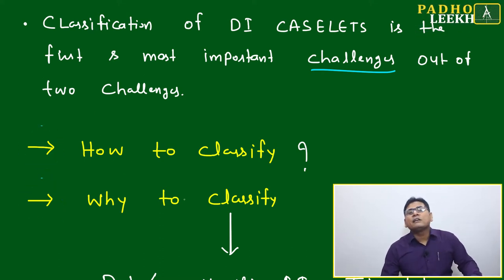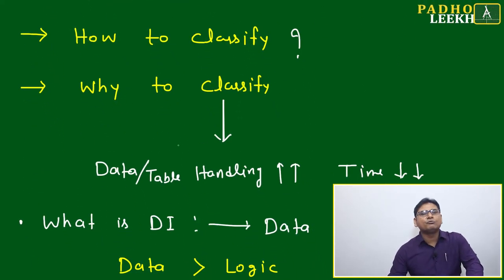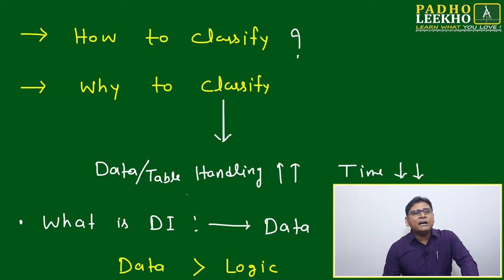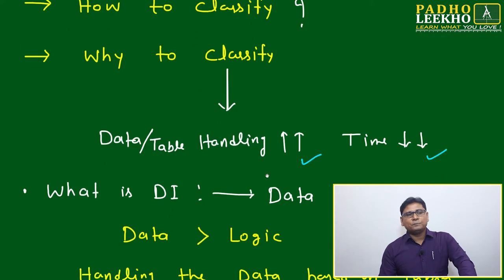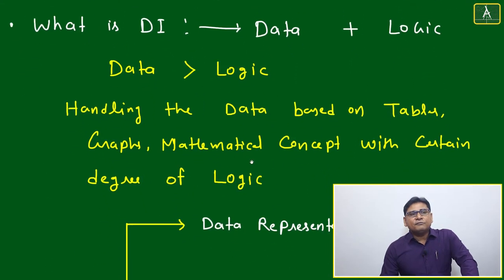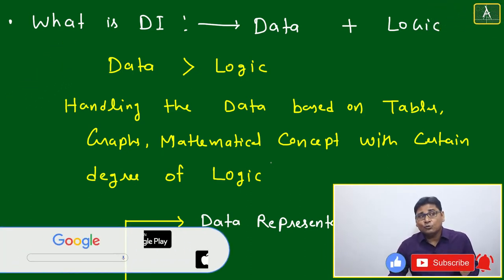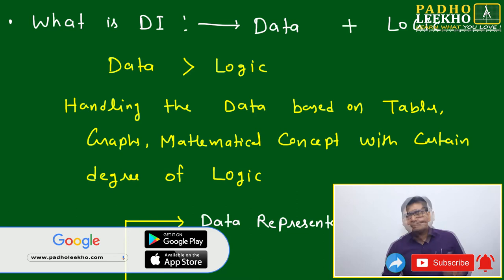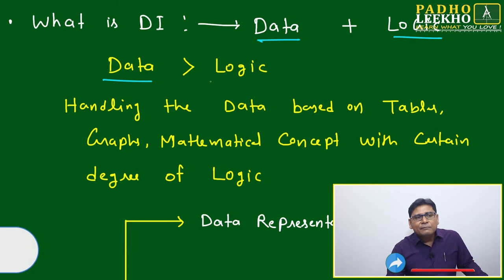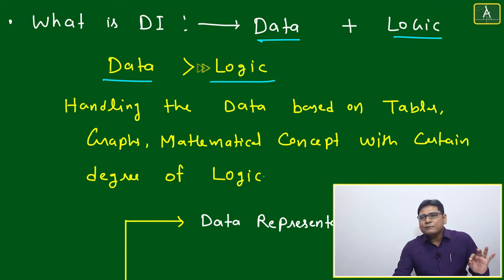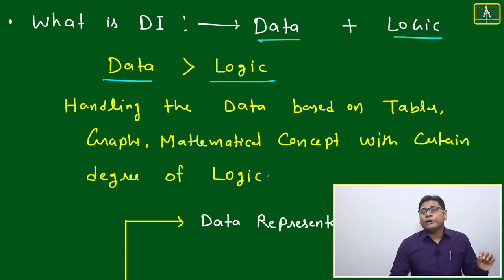Two key questions: how to classify and why to classify. We classify because data and table handling improves and time reduces. Now, the most basic question — what is DI? DI is simply a combination of data and logic. In DI, data is more prominent than logic, meaning sense of data handling is more important than pure logical reasoning.